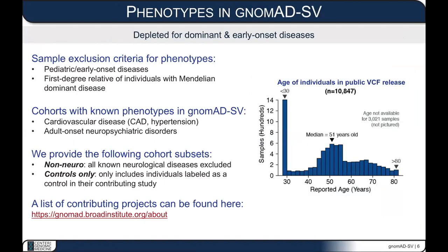A common question we get about gnomAD is what phenotypes are and are not present. gnomAD is a large-scale aggregation effort to bring together as many human genomes and exomes as possible, generally across population genetics and common and complex disease association studies. There's no predominant phenotype that is or is not present. However, any sample with a known pediatric or early-onset disease, or any first relative of any individual with a known dominant or Mendelian disease, is excluded outright from gnomAD.